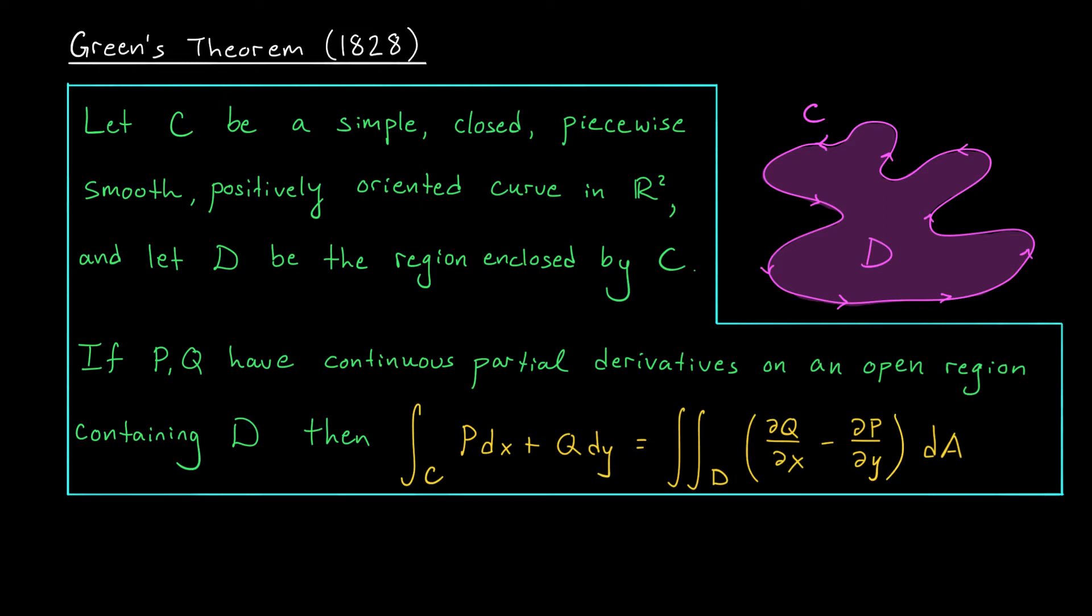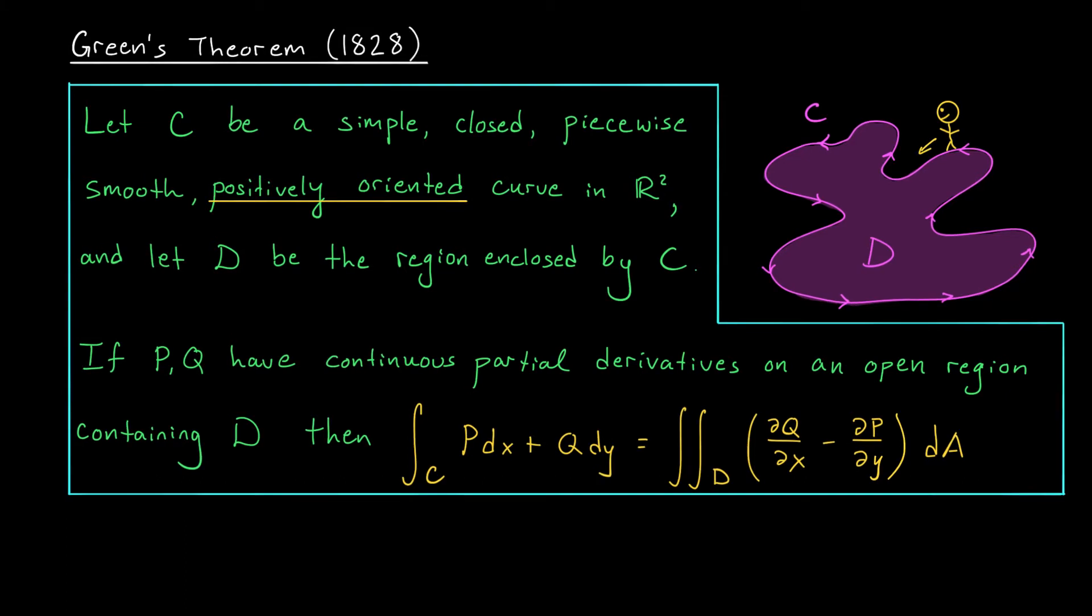Finally, positively oriented, which is likely a term you haven't heard before. Positively oriented just means that if we put a little man on our curve and we ask him to walk around in the direction of the arrows, then the inside of our region is always to his left. If he were to walk in the other direction, you can see that the region D would be on his right. That's negative orientation.